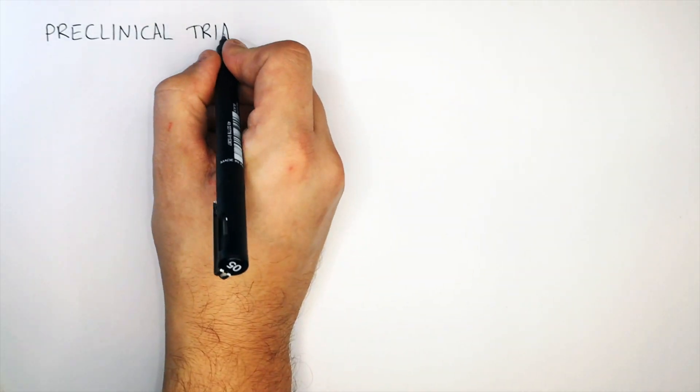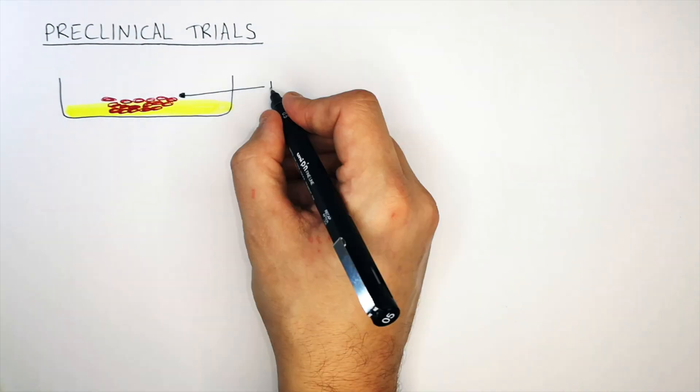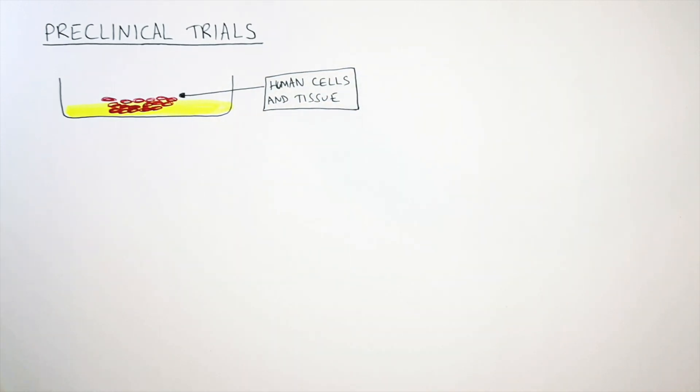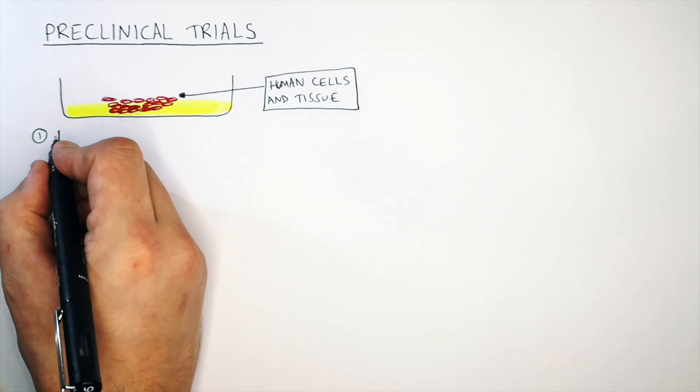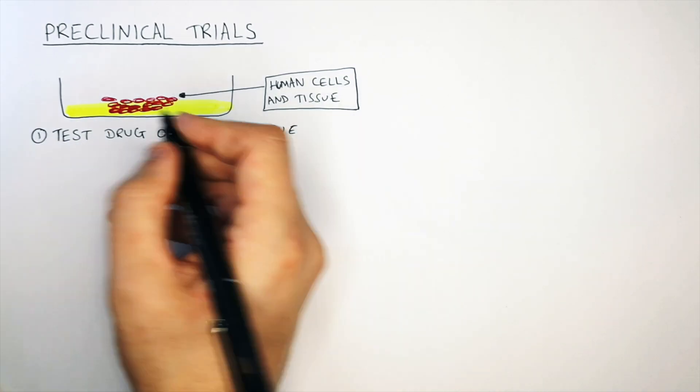Preclinical trials is the first stage of drug testing whereby the toxicity of the drug is tested on human cells and human tissue in the lab and not on living organisms. So remember stage one is to test the drug on cells and tissues in the lab.